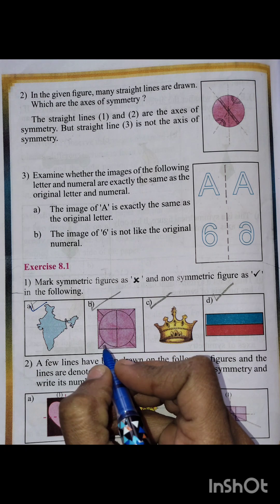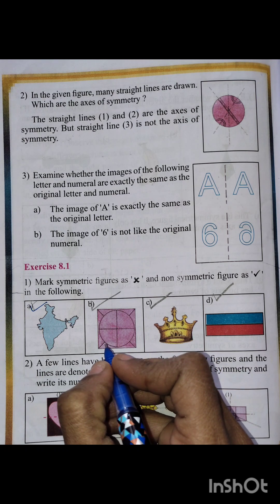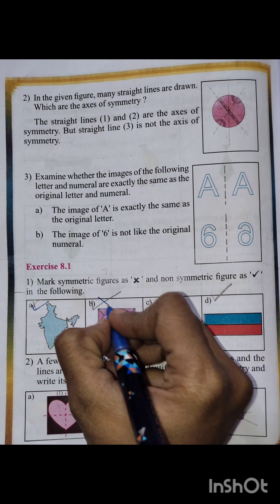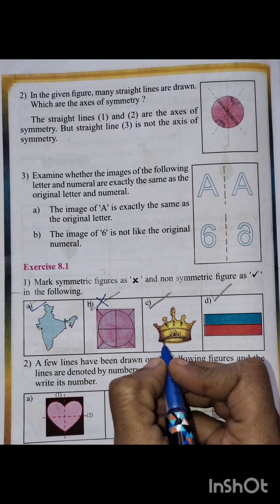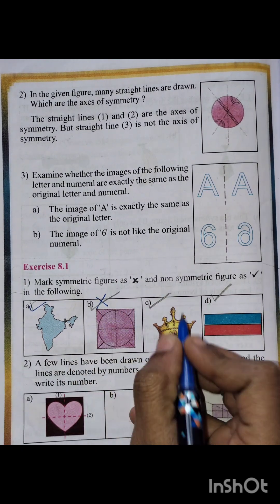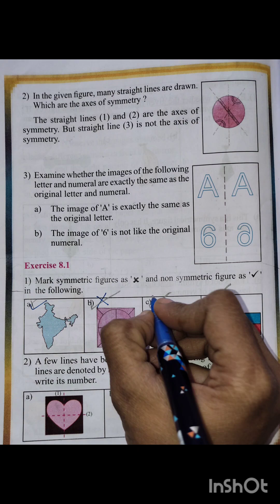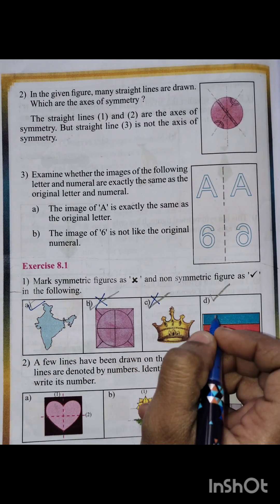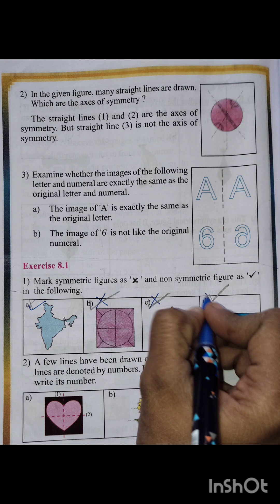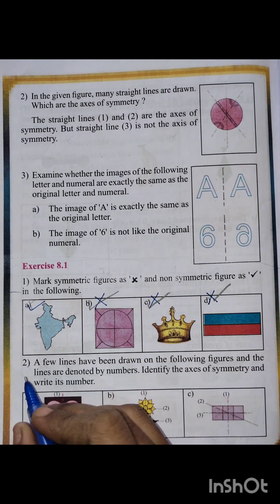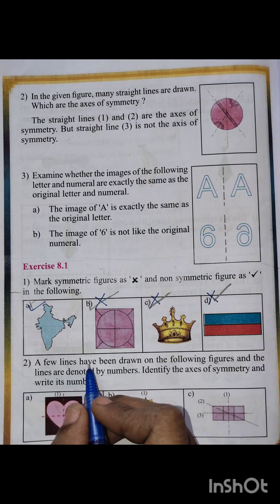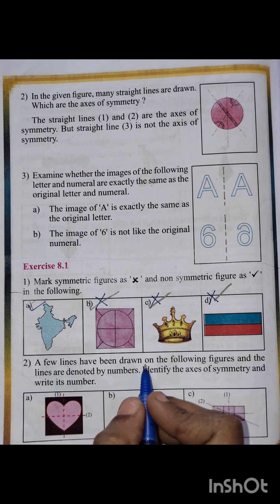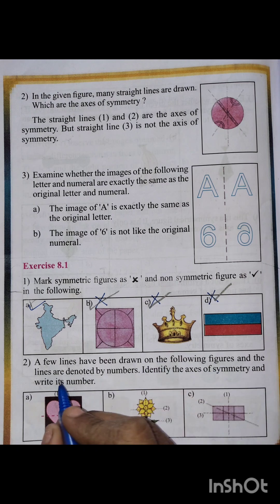The second figure is a symmetrical figure, so we mark it as wrong. The third one is also a symmetrical figure, so mark it as wrong. The fourth one is also a symmetrical figure, mark it as wrong.